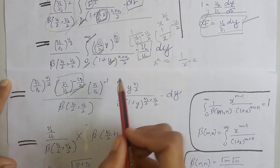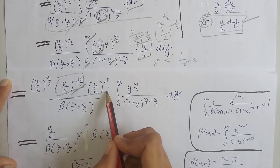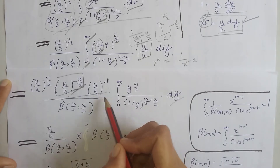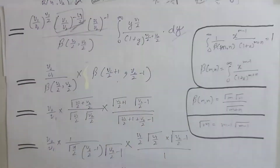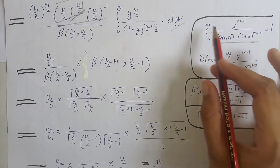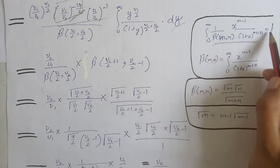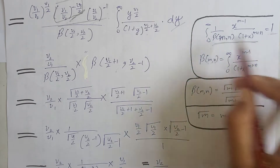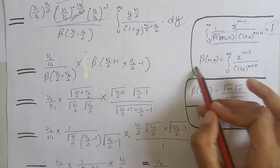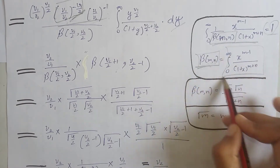We take the constant terms outside the integral because they do not contain y. The remaining integrand is the PDF of the beta distribution, and integrating from 0 to infinity its value equals 1. On taking this term, we get the definition of the beta function.